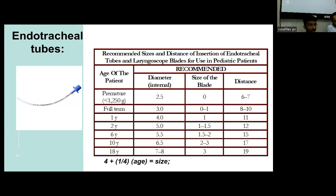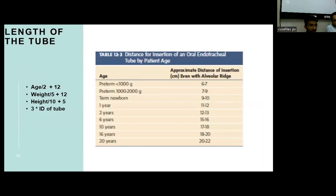Regarding endotracheal tubes, we calculate the size using the formula: 4 + (age/4). For a premature baby the size is 2.5, and for a full-term infant it is 3. The depth of insertion is calculated as: age/2 + 12, or weight/5 + 12, or 3 times the tube size. For a term infant, the tube is placed at the 9 to 10 cm marking; for a 1-year-old child it is 11 to 12 cm.